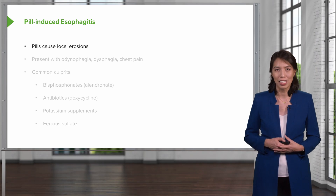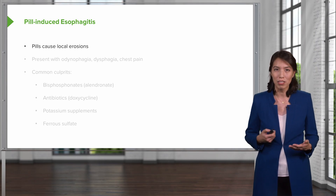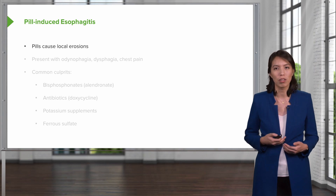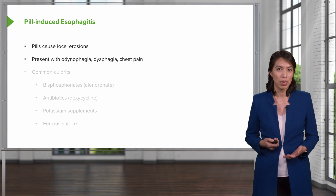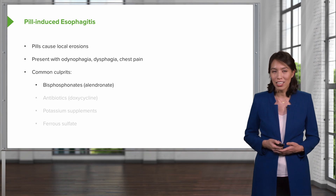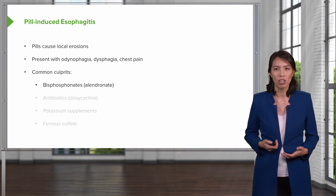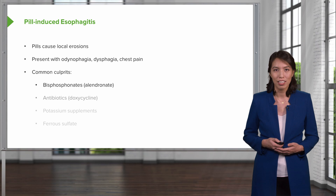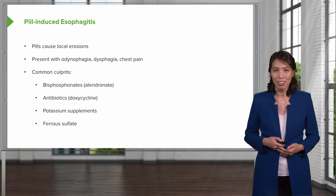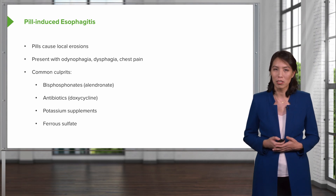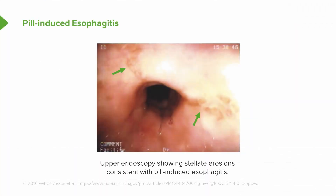The second type of esophagitis is pill-induced esophagitis. This is when pills become stuck in the esophagus and cause local erosions. Patients will present with pain with swallowing, difficulty swallowing, and may have chest pain. Common medications that cause this are large pills that are difficult to swallow — common culprits include bisphosphonates like alendronate, antibiotics such as doxycycline, potassium supplements, and iron supplements. On the right, you can see an upper endoscopy showing stellate erosions consistent with pill-induced esophagitis.